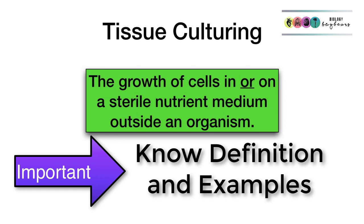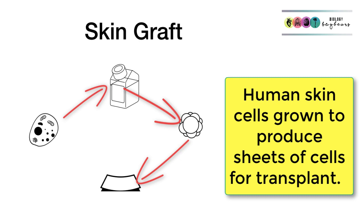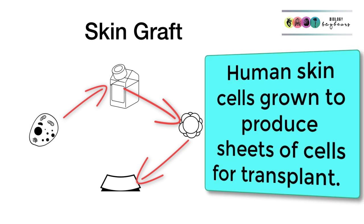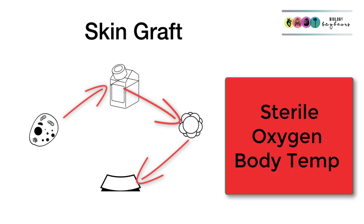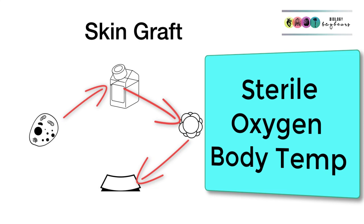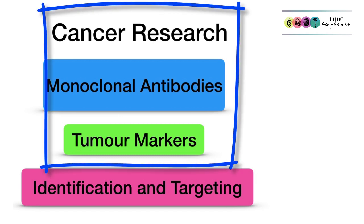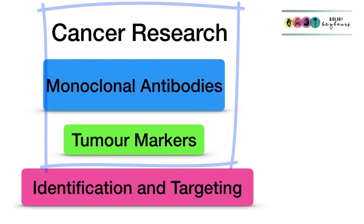Tissue culturing is the growth of cells in or on a sterile nutrient medium outside of the body — basically taking cells from a living organism, putting them in a petri dish, treating them, and growing them into a useful product. Skin grafting is one example, where skin cells are grown in sterile nutrient medium to produce a sheet of cells used on burns patients. Conditions must be perfect: sterility, oxygen, and body temperature. Another example is cancer research, particularly the production of monoclonal antibodies, used to identify tumours and for targeted drug delivery.